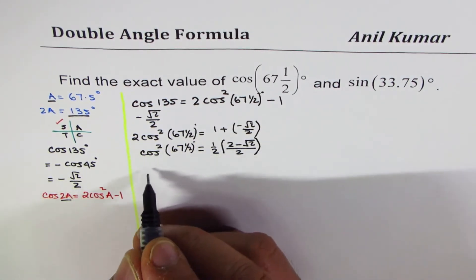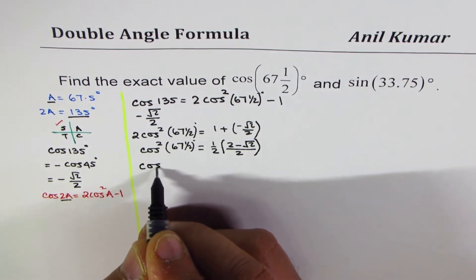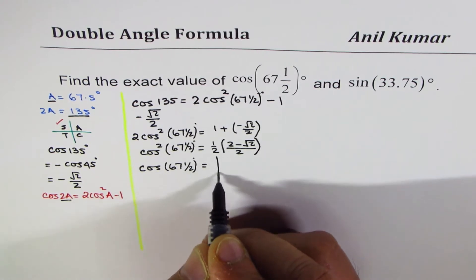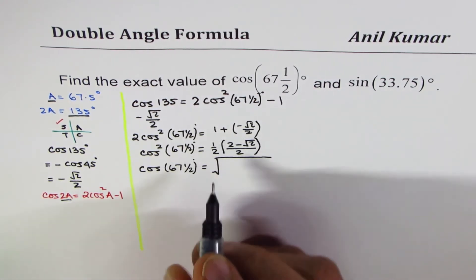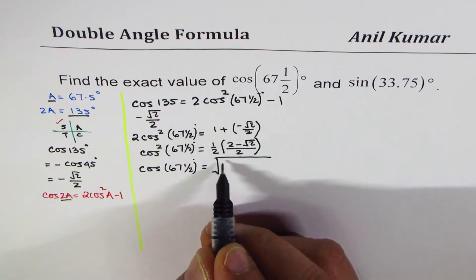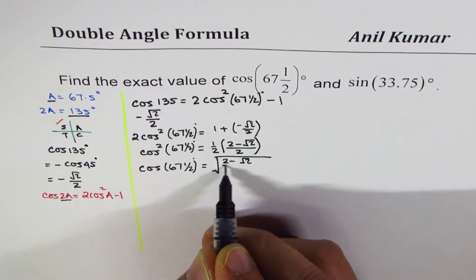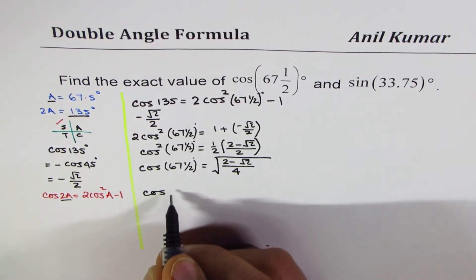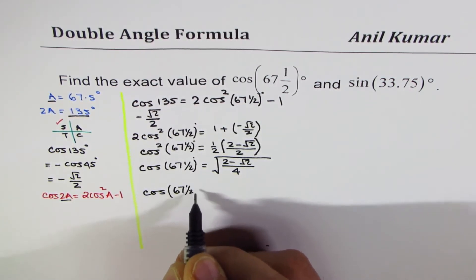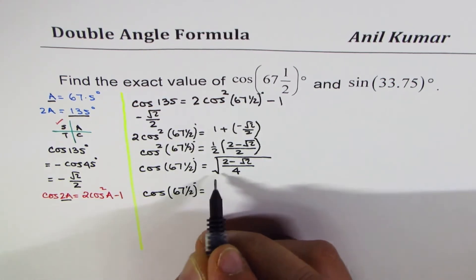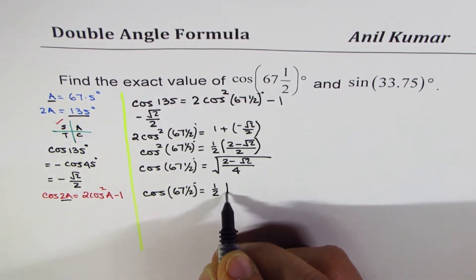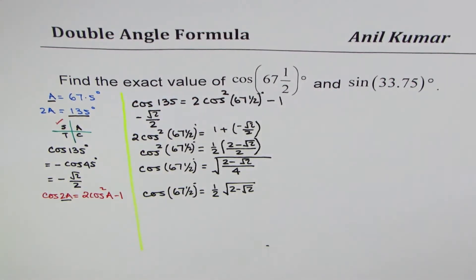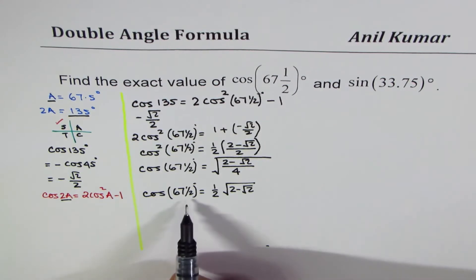We can square root now, so we have cos 67.5 degree as equal to square root of all this. So 2 times 2 is 4, so I could write this as 2 minus square root 2 over 4. And then we could simplify it further, saying cos 67.5 degree is equal to half outside the square root, and within square root we get 2 minus square root 2. So that is the expression for 67.5.